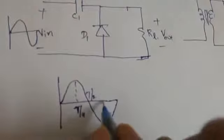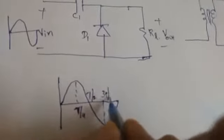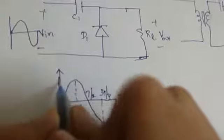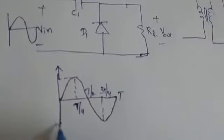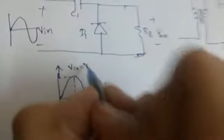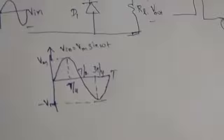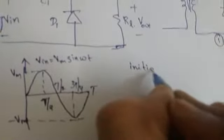The time axis is marked at T/4, T/2, 3T/4, and T. The positive peak and negative peak are shown. The sinusoidal waveform is represented as V_in = Vm sin(ωt), meaning the peaks will be Vm and minus Vm. The initial assumption we make is that the capacitor is not charged — whatever capacitor we consider here, it is uncharged.